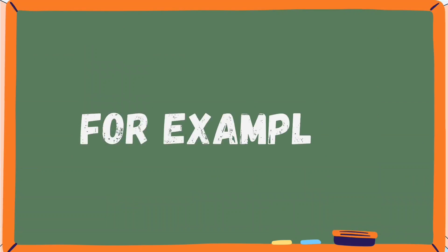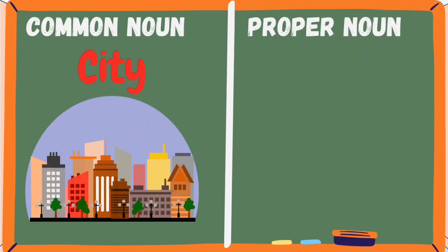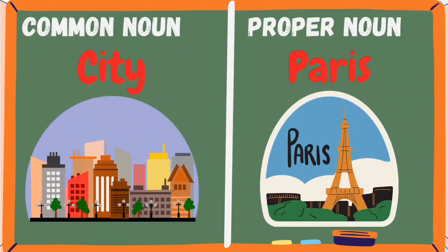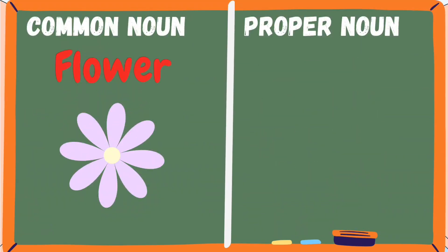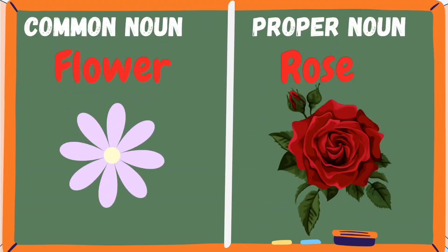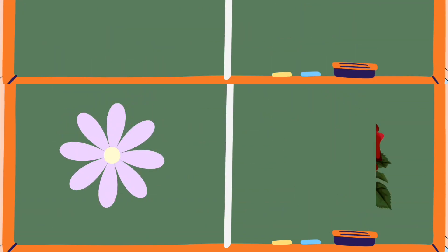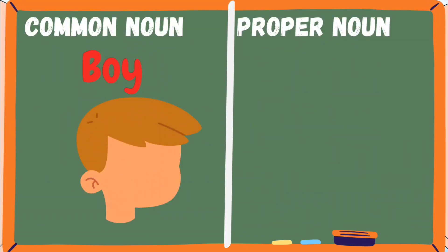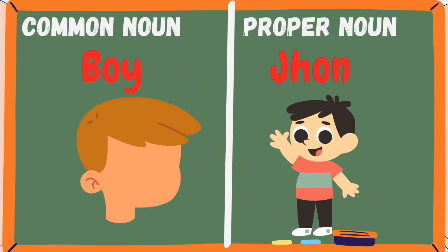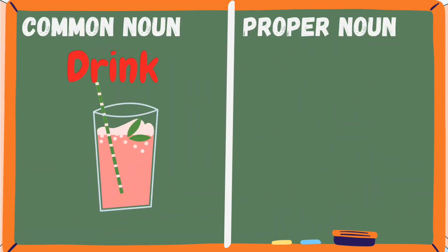For example: City (common noun) — Paris (proper noun). Flower (common noun) — Rose (proper noun). Boy (common noun) — Joan (proper noun). Drink (common noun) — Coke (proper noun).